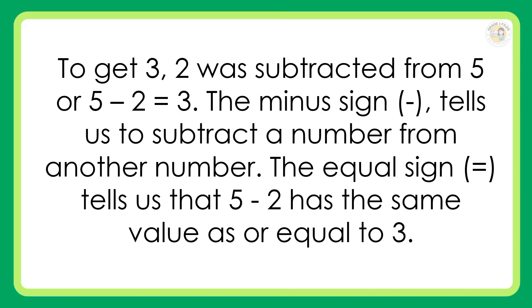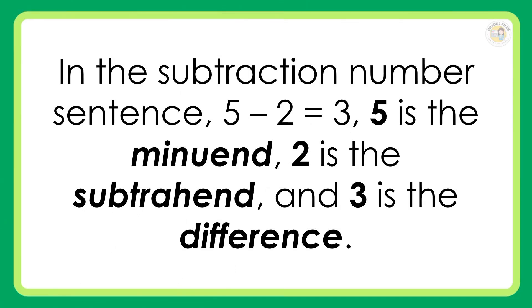To get 3, 2 was subtracted from 5, or 5 minus 2 is equal to 3. The minus sign tells us to subtract a number from another number. The equal sign tells us that 5 minus 2 has the same value as, or is equal to, 3. In the subtraction number sentence 5 minus 2 is equal to 3: 5 is the minuend, 2 is the subtrahend, and 3 is the difference.